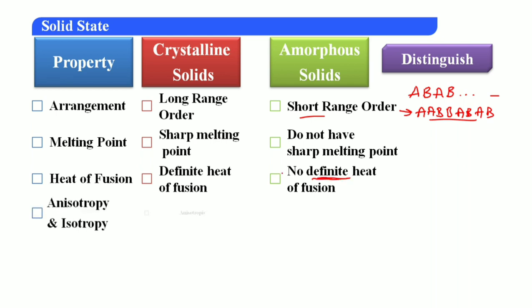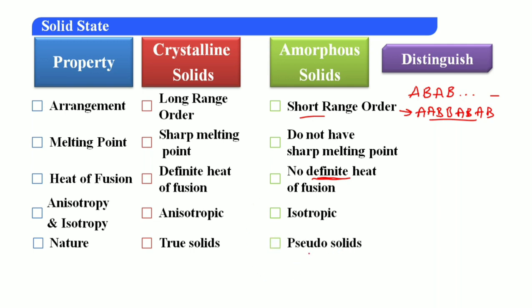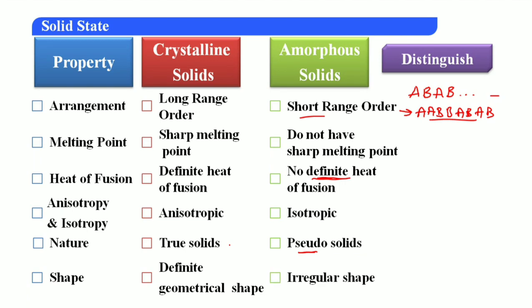Anisotropy versus isotropy: crystalline solids are anisotropic; amorphous solids are isotropic. Nature: crystalline solids are true solids; amorphous solids are pseudo-solids — they are solids but do not have all complete properties of true solids. Shape: crystalline solids have a definite geometrical shape; amorphous solids have an irregular shape. Examples of amorphous solids include plastic and glass; everything else generally comes under crystalline solids.